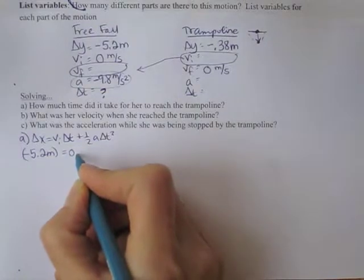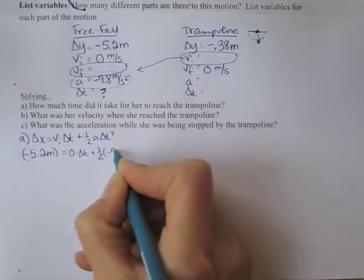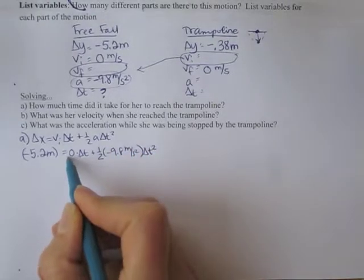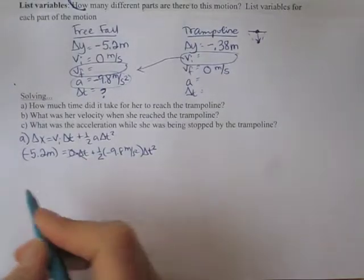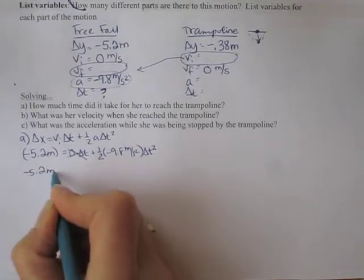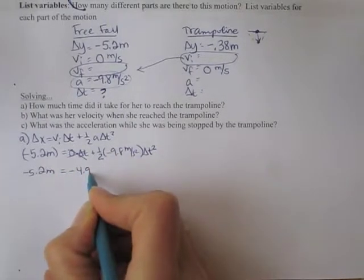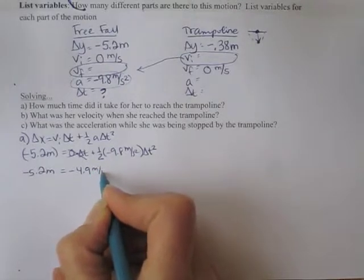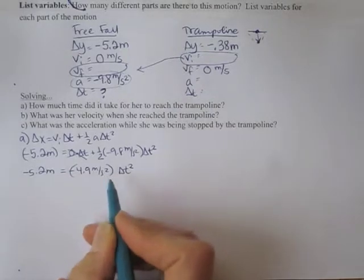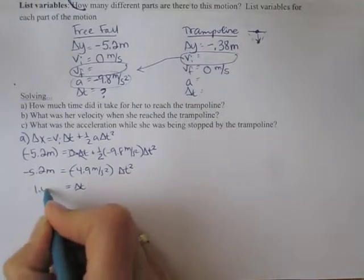The initial velocity is 0 times the time. So this term is gone because that's 0. So I have negative 5.2 meters equals 9.8 divided by 2 is 4.9. Okay divide both sides by negative 4.9. Take the square root and you'll get delta t is 1 second.